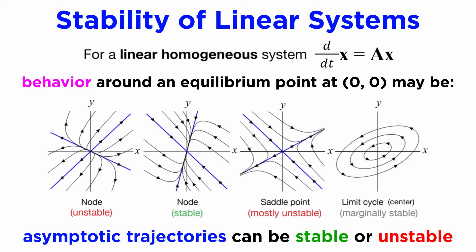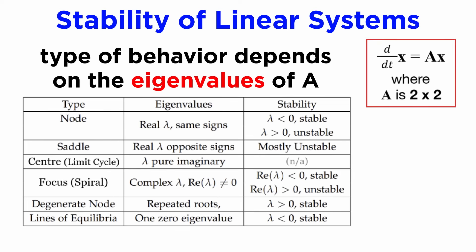We can then consider how trajectories around equilibrium points behave, which is the concept of stability. A stable equilibrium point tends to attract nearby trajectories, while an unstable point repels them away, and these can be identified by the eigenvalues of the system, as shown in this table.